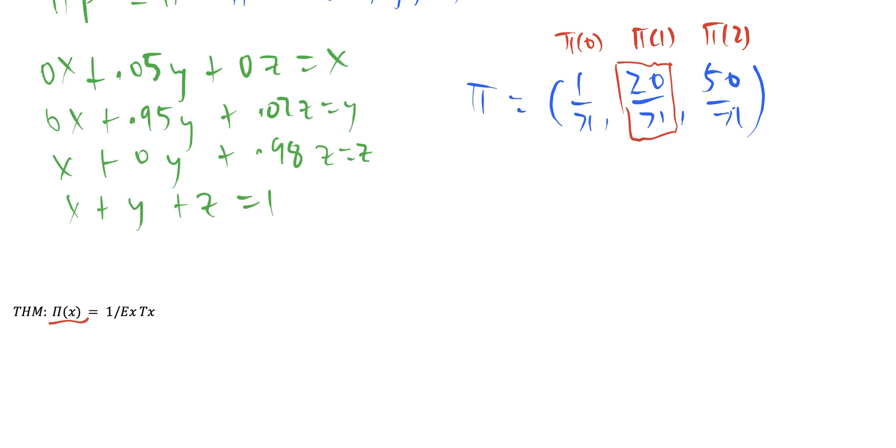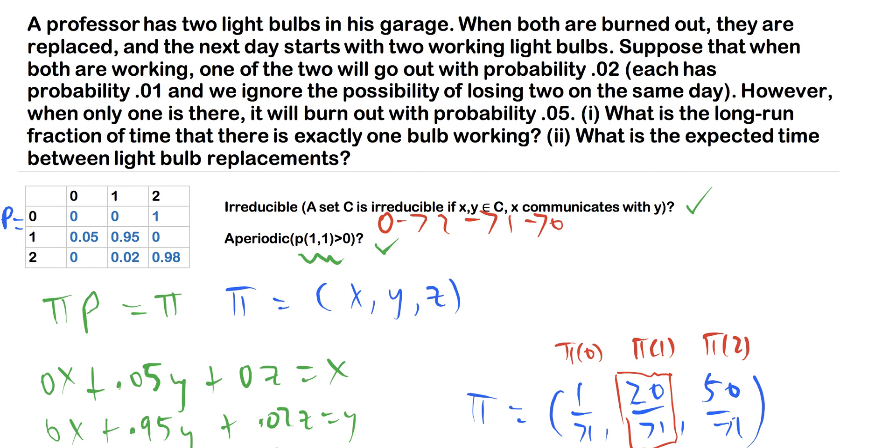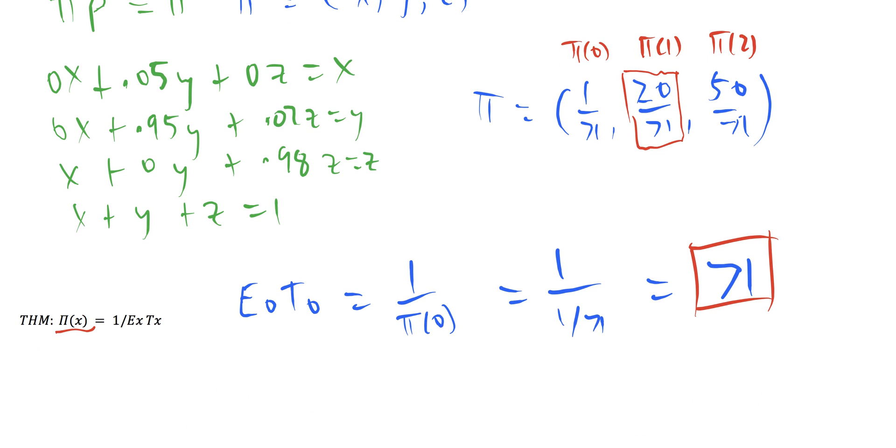So what we're looking for here is E[T_0], right? Does that make sense? So what's the expected time that we get to 0, so we can then replace these lightbulbs? Now we already know what π(0) is. So from this theorem here, we've got the stationary distribution of the state x equals 1 over the expected time it takes to get back to x. So what this equals is 1 over π(0). Well, we've just calculated π(0). This is 1 over 1 over 71, which equals 71. So using this theorem, we know that the expected time it takes between lightbulb replacements is going to be 71 days. And that's the end of the problem.